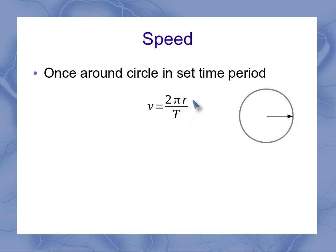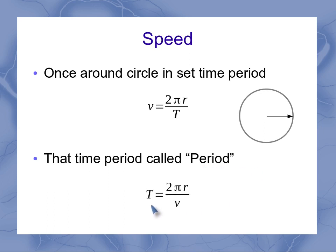So I can measure the speed then as 2πr, the circumference of the circle, divided by the time it takes to go once around. And this time period, the time it takes to go once around, is called just the plain period. So they shorten down time period for once around the circle to just period. And you can calculate the period then by using 2πr over the velocity. So if you're given the speed and the radius, you can find the period. If you're given the radius and the period, you can find the speed.